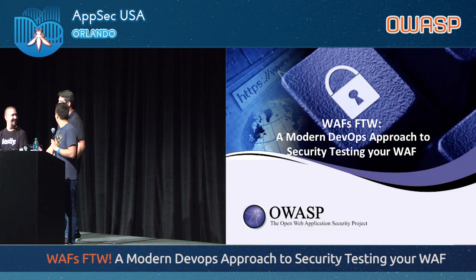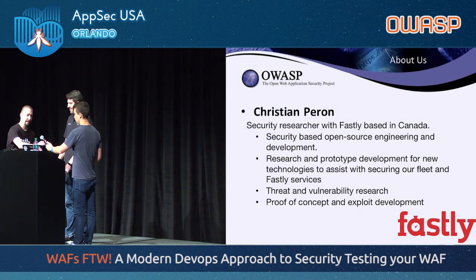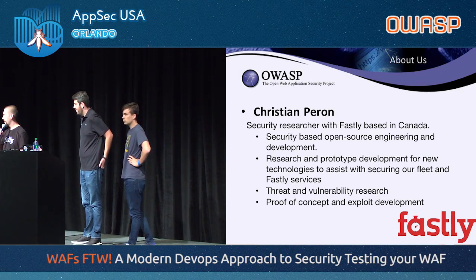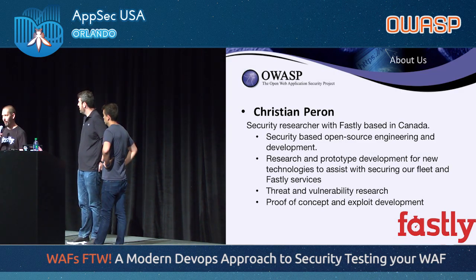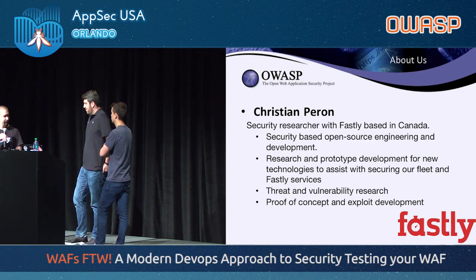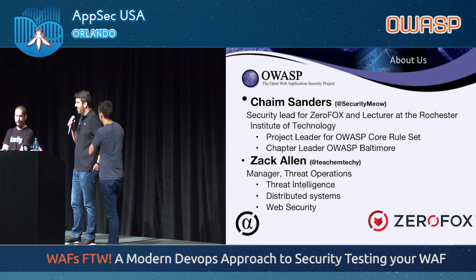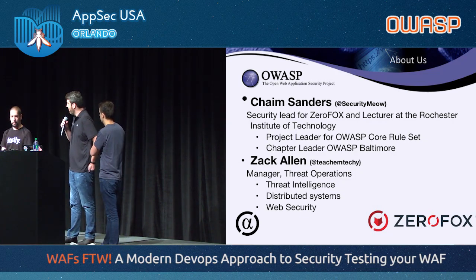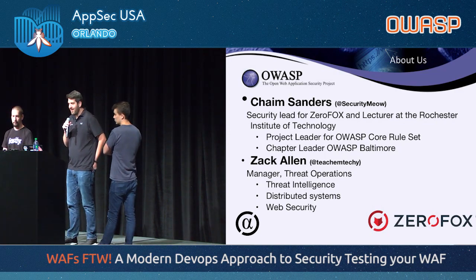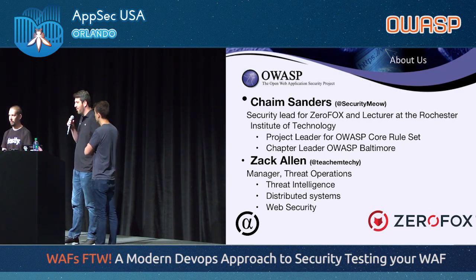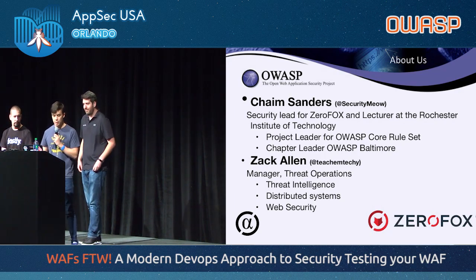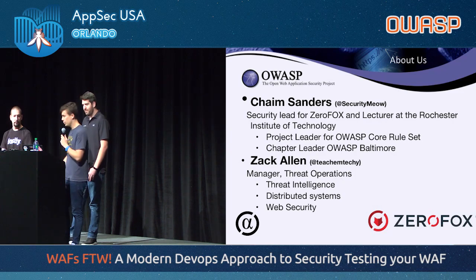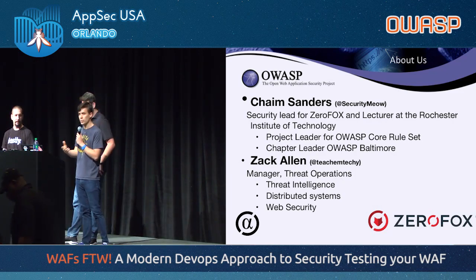I'm Christian Perron. I do security research at Fastly, I'm a big advocate for open source, and I primarily focus on threat and vulnerability research. My name is Chaim Sanders. I work as the security leader at Zero Fox, which focuses on social media security. I also lecture at the Rochester Institute of Technology, and I'm the project leader for the OWASP Core Rule Set and co-lead for OWASP Baltimore. And my name is Zach Allen — I work at Zero Fox as a manager of threat operations, doing threat intelligence and web security work.